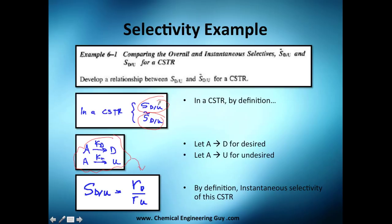You're going to choose the first one - instantaneous selectivity. By definition, it's rate of reaction of D versus rate of reaction of U. We cannot do any more because we don't know the rate of reaction. This is the first equation we're going to compare.